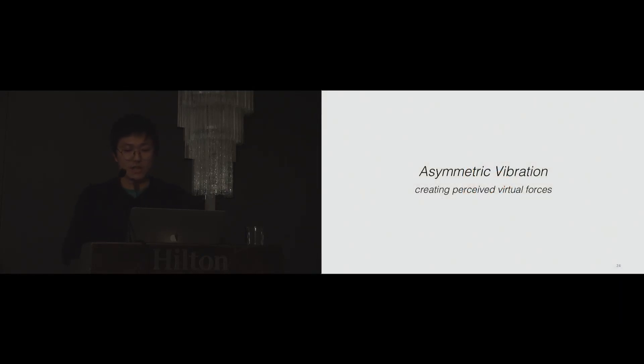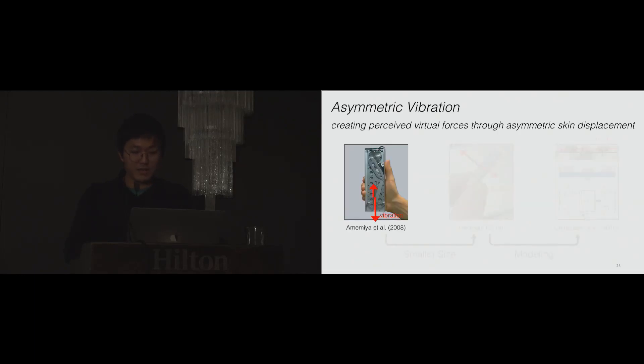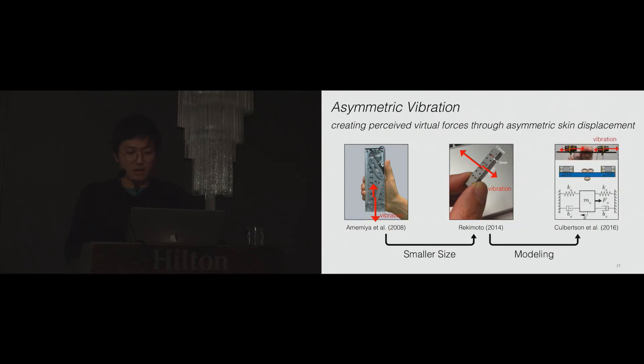Recently, there is an interesting research topic about this called asymmetric vibration. Researchers found that humans sense virtual kinesthetic force through asymmetric vibration. Amamiya et al. investigated this virtual force effect first in 2008 using their slider crank linkage device. More recently, Rekimoto found the same effect using a voice coil actuator, which is much smaller and lighter than Amamiya's device. Then, Culberson et al. have modeled the asymmetric vibration from a voice coil actuator. So far, there are not many applications using this illusion, and we thought it can be a good trial to use this illusion for a haptic device.